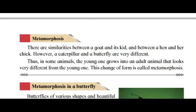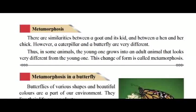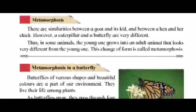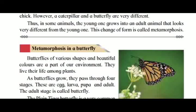Metamorphosis. There are similarities between a goat and its kid, and between a hen and her chick. However, a caterpillar and a butterfly are very different. Thus, in some animals the young one grows into an adult animal that looks very different from the young one. This change of form is called metamorphosis.